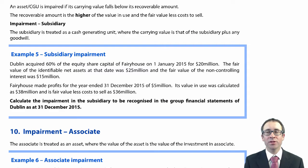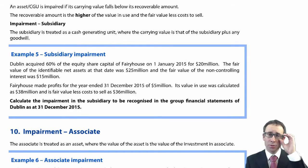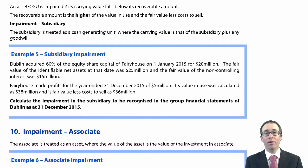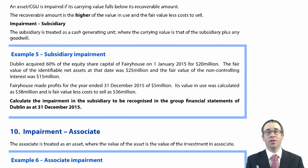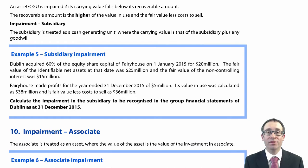Let's go through and look at impairment. This is the first real new bit with regards to P2, because when you went through and looked at impairment within F7, you were always given the impairment in the subsidiary and you were always given the impairment in the associate. All you had to do was take that number and process the accounting entries within the group financial statements. Now at P2 level, you'll still have to process the entries within the group financial statements, but you may also be required to calculate the impairment. It isn't actually anything too new because we've already looked at impairments in IAS 36 within F7.